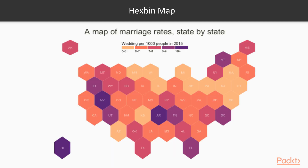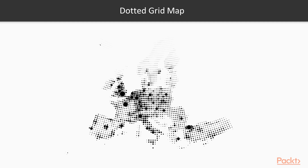This hexagon map of the United States shows marriage rates. Each state is represented by a hexagon, and the color represents the number of weddings per thousand people. By dividing the states into hexagons, it is not proportionally representing the area of each state. Similarly, a dotted grid map uses a network of grids to represent an area. It uses different dot sizes to show magnitude instead of color, similar to a dot map.